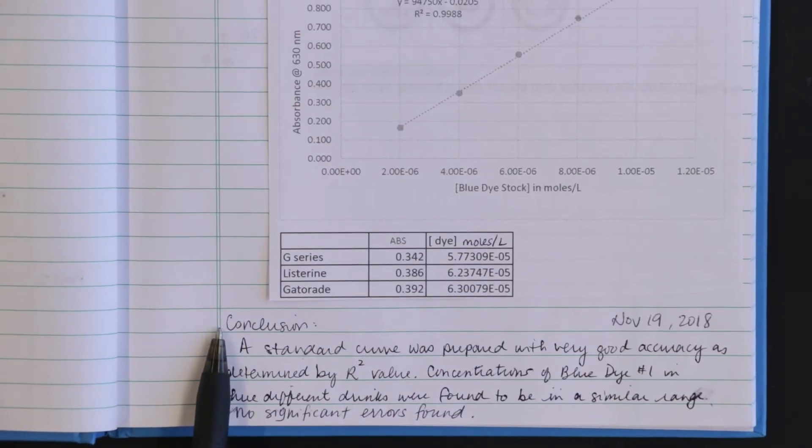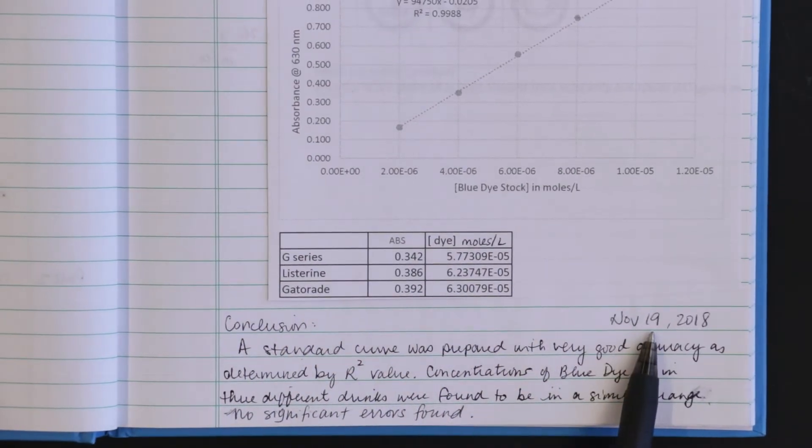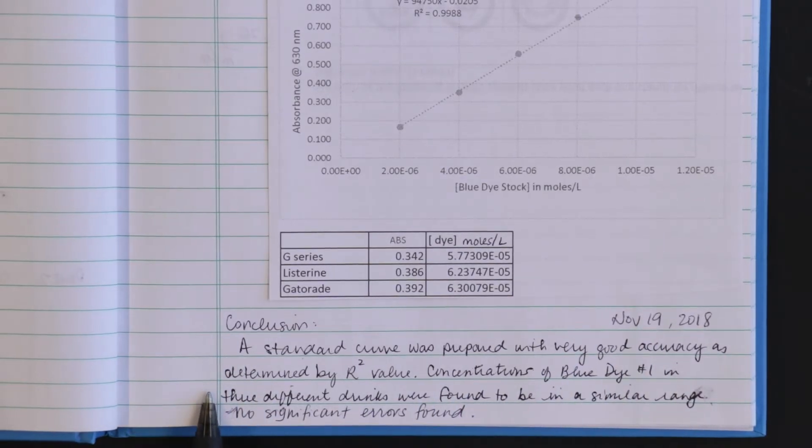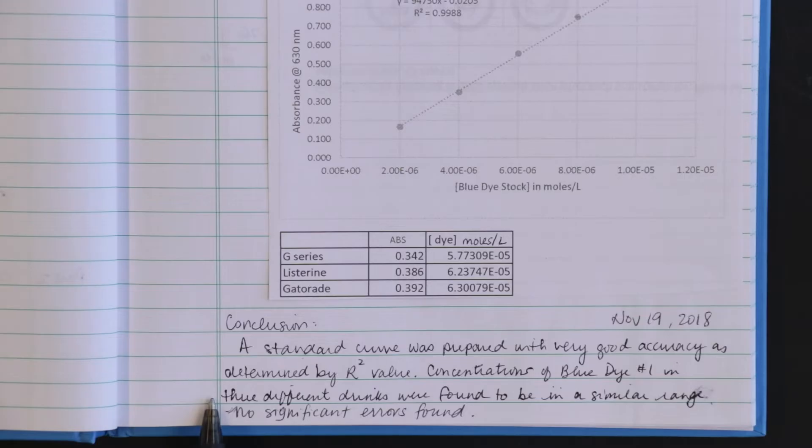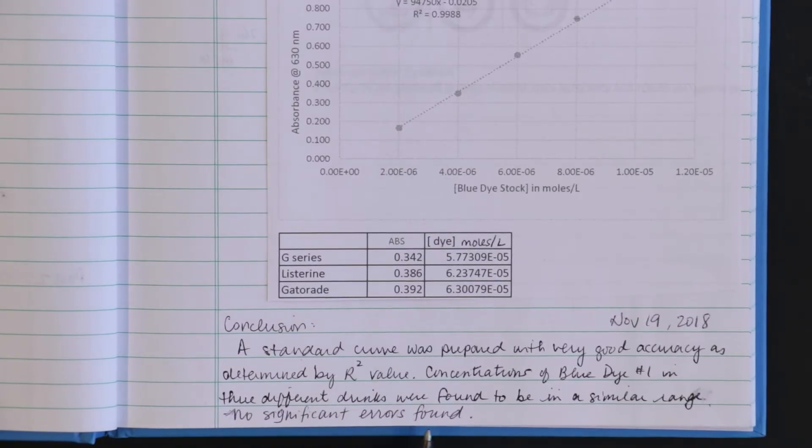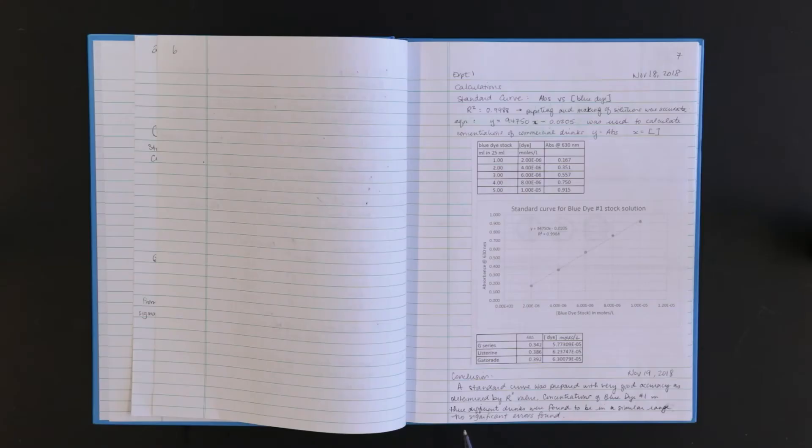This is the conclusion or discussion section. Note the new date. State the results. Did you get the expected results? Name any sources of error and how it would have affected your experimental values. If there is a significant error such as you spilled your sample you must account for it in your procedure. In this example the discussion or conclusion section is fairly short. Remember that different courses have different expectations when it comes to their discussion and conclusion sections and it's important to consult the lab manual.